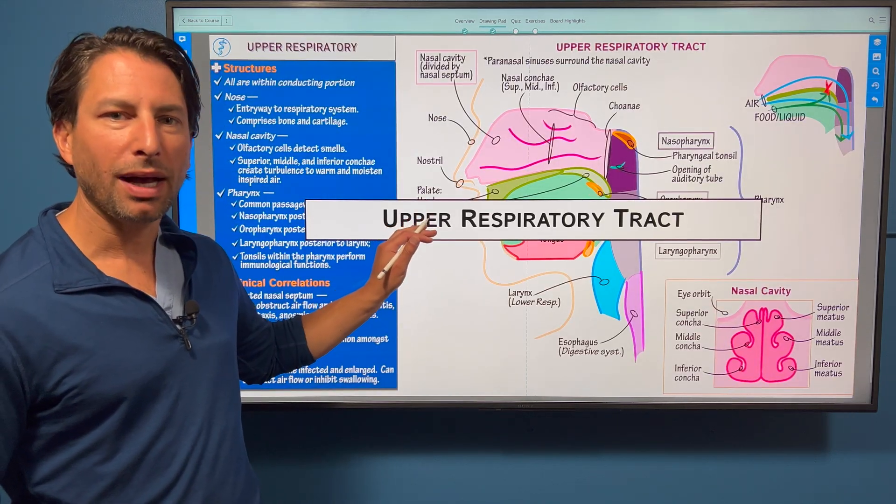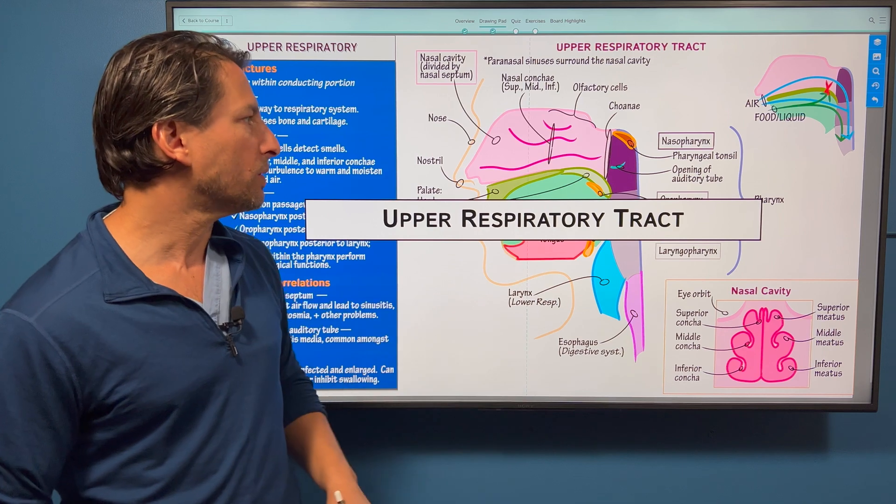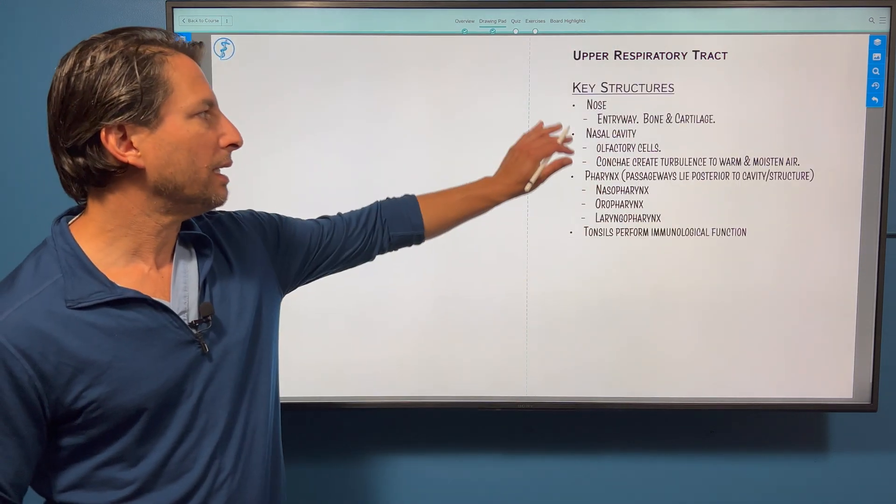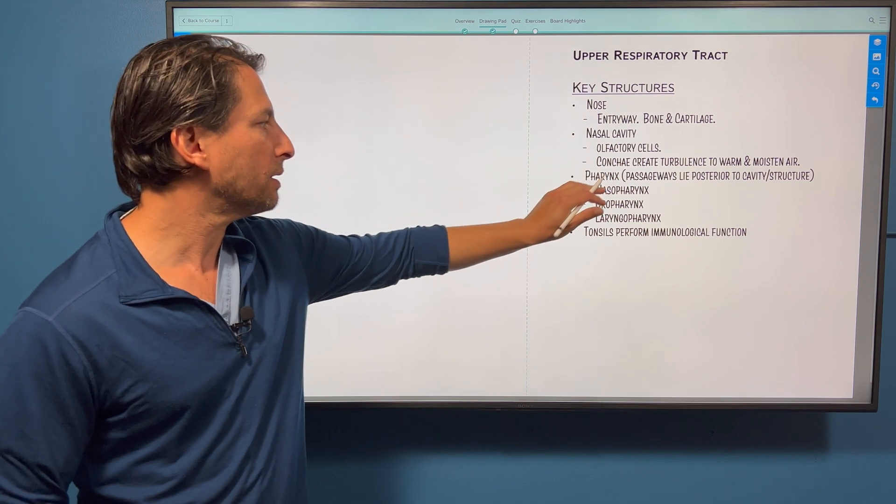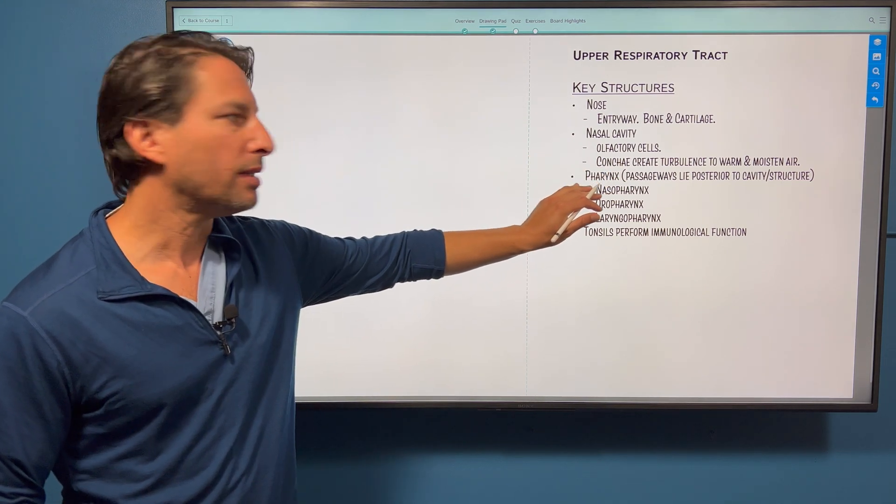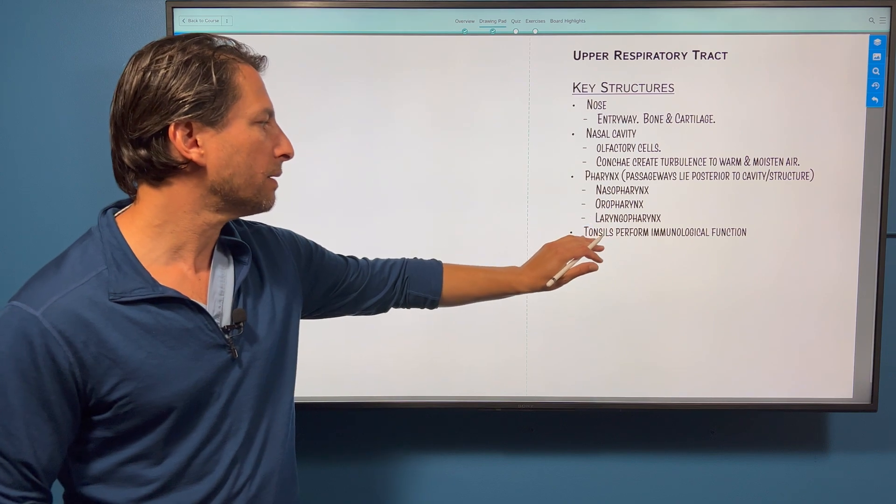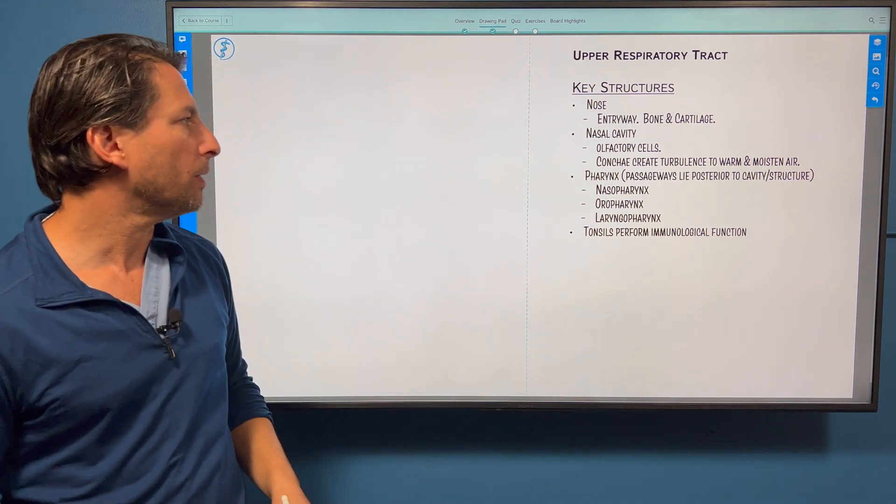Going from top to bottom, we'll start with the upper respiratory tract. Here are the key structures. The nose is the entryway, nasal cavity with its olfactory cells, we'll point out. And then these different passageways and pharynx, and then the tonsils for immunologic function.